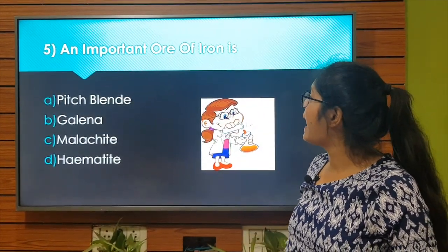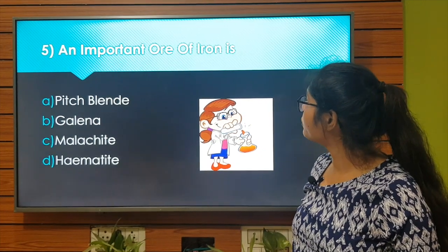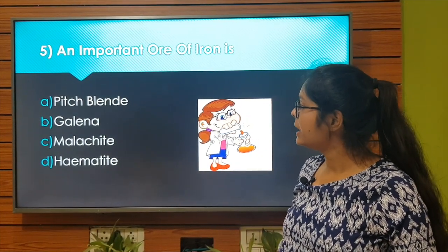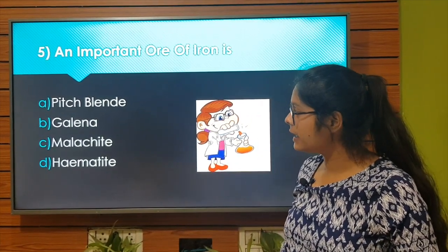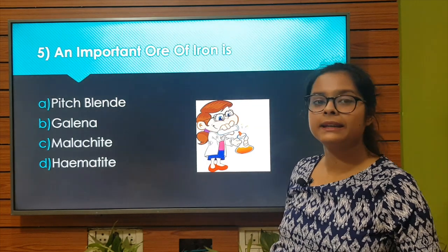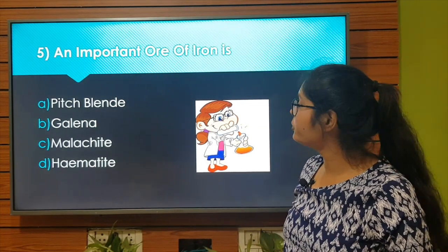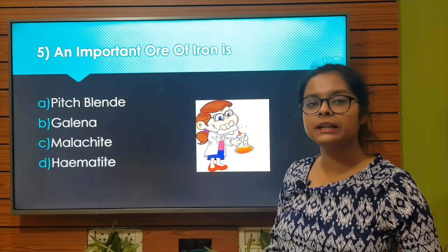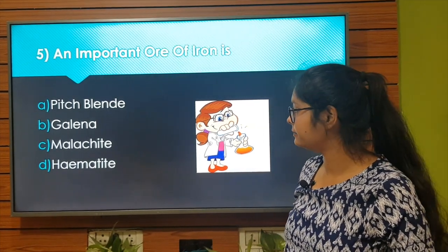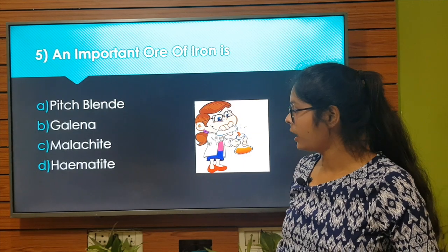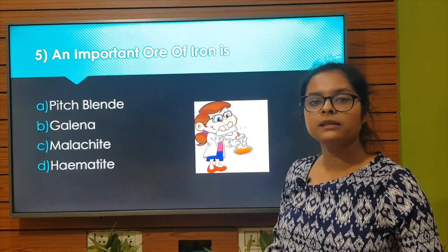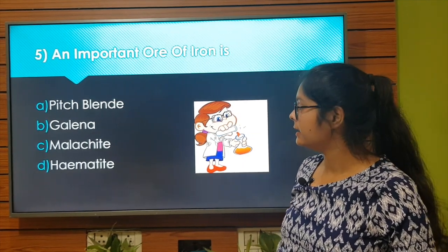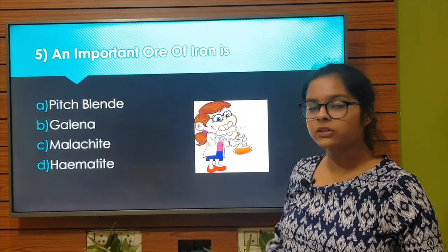An important ore of iron is: Option A: Pitch blende. Option B: Galena. Option C: Malachite. Option D: Hematite. The right answer is Option D: Hematite. Let's move to the next question.